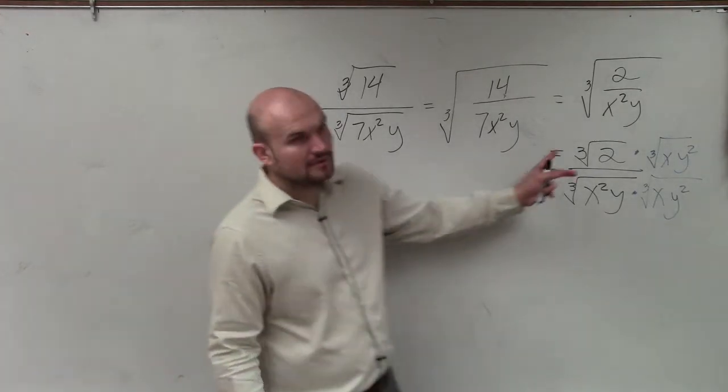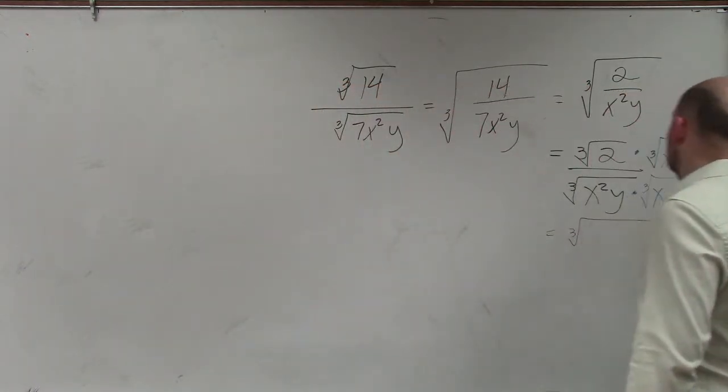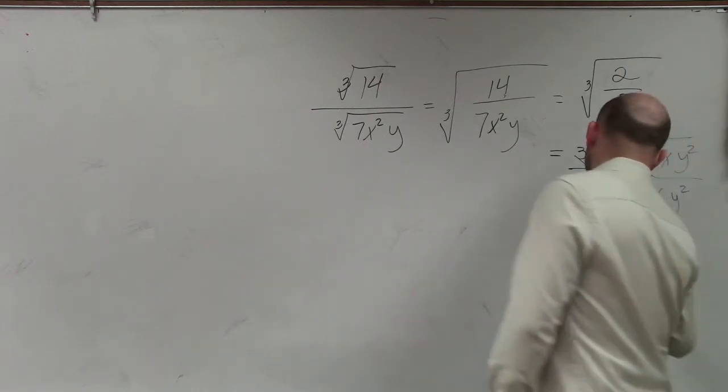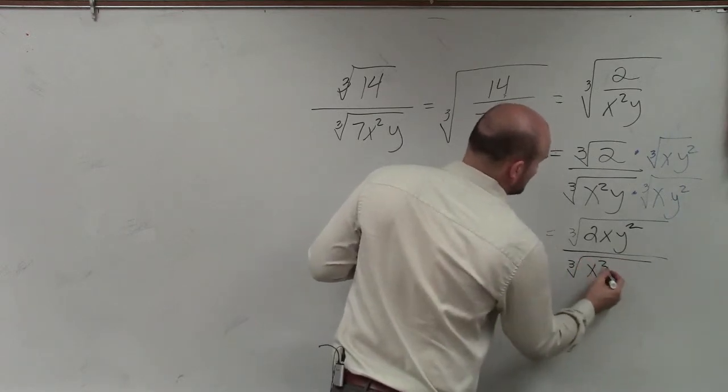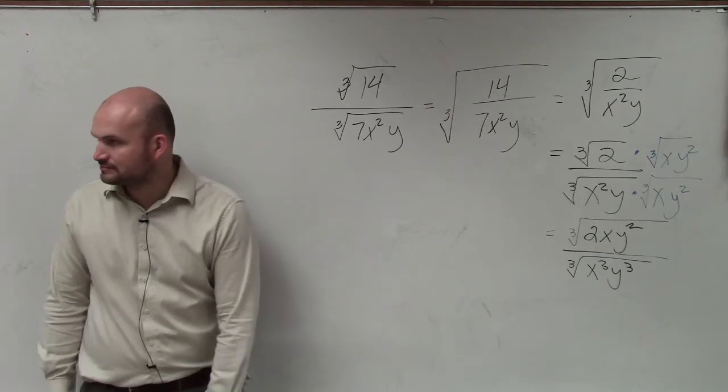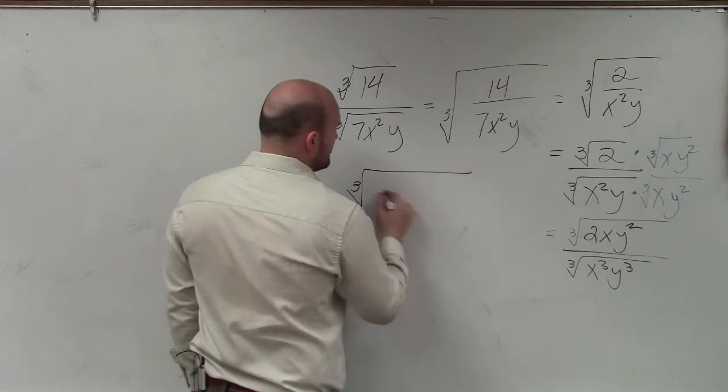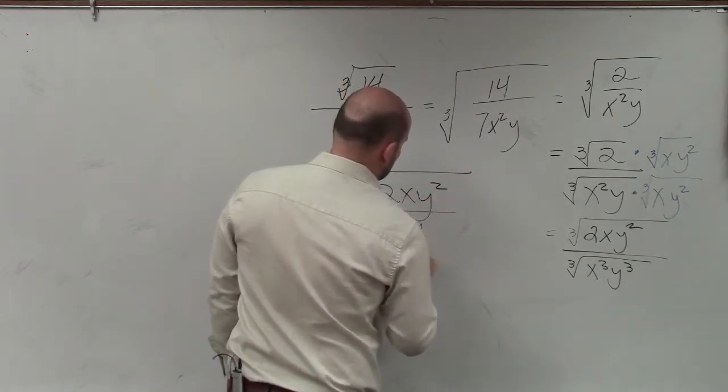So now, I multiply this, and I have the cube root of 2 times x times y², and then over here, I have the cube root of x³, y³. Well, do I know what the cube root of x³ and y³ is? X and y. So my final answer is cube root of 2xy² all over xy.